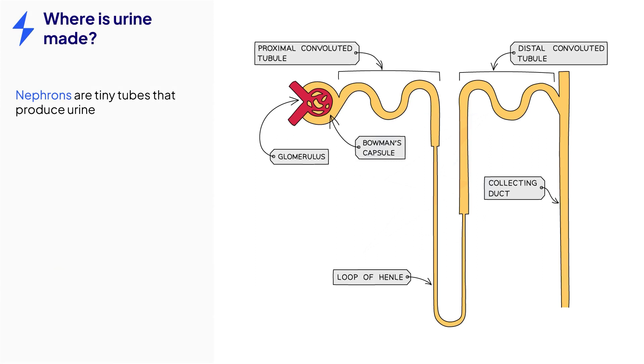The nephrons, which are also called the kidney or renal tubules, are tiny tube-like structures that are responsible for the formation of urine.